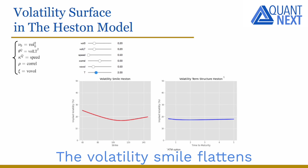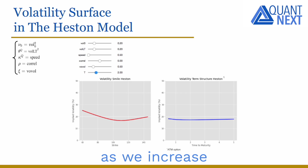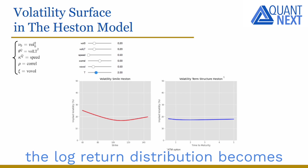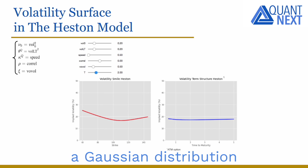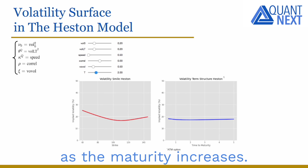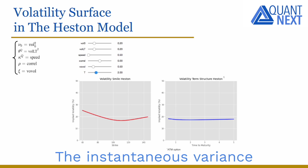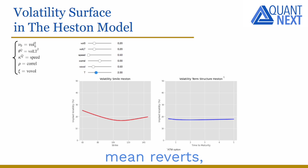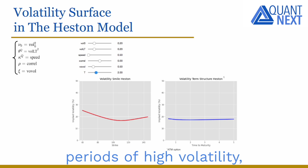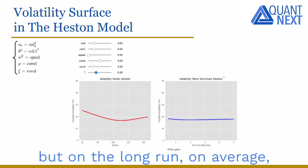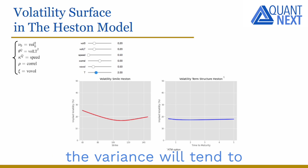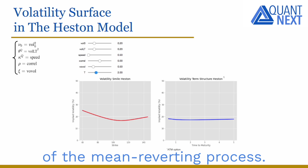The volatility smile flattens as we increase the maturity of the option. This makes sense as the log-return distribution becomes increasingly similar to a Gaussian distribution as maturity increases. The instantaneous variance mean-reverts — there will be periods of high volatility and periods of low volatility, but in the long run the variance will tend toward the long-term average of the mean-reverting process.